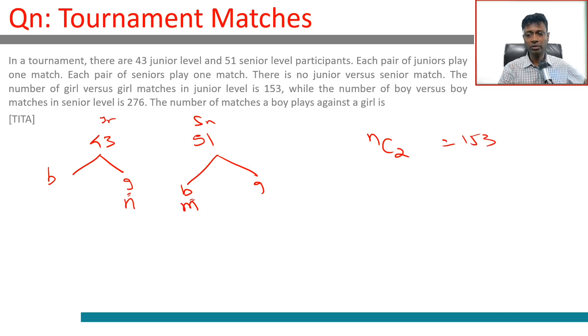n girls, number of matches would be n C 2. n C 2 is 153. n into n minus 1 by 2 is 153. n into n minus 1 is 306.